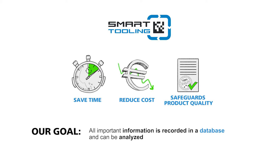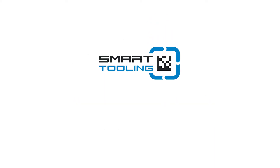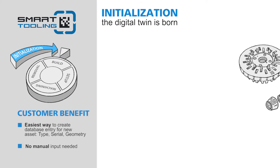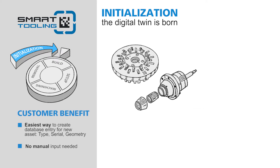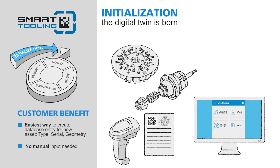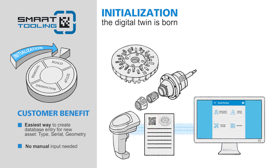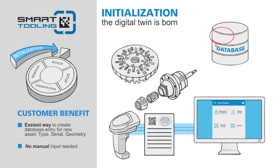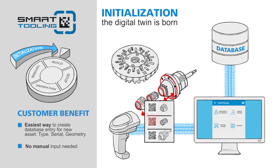Get to know the Smart Tooling cycle. Initialization — the digital twin is born. Have you acquired any tagged Klingenberg fixtures or cutter heads? In order to upload your tool data in the Smart Tooling app, scan the provided card. Entering data manually is no longer necessary. The app automatically transfers all of the relevant properties of the cutter head and the individual components of the fixture to a database.